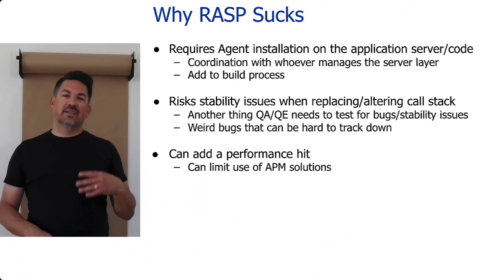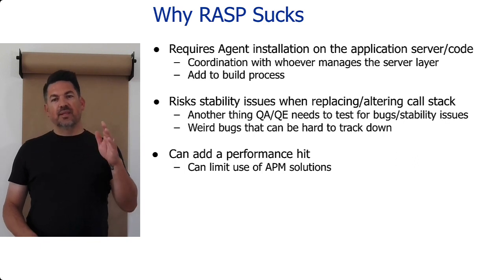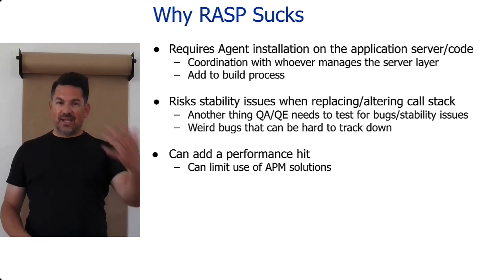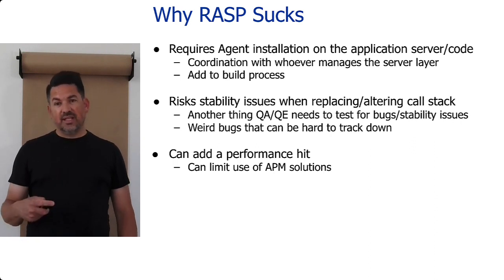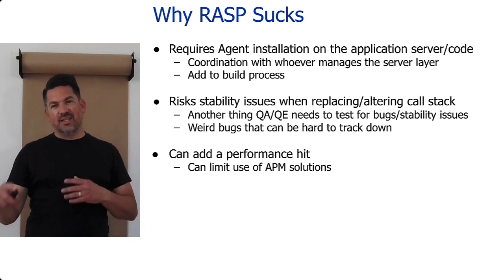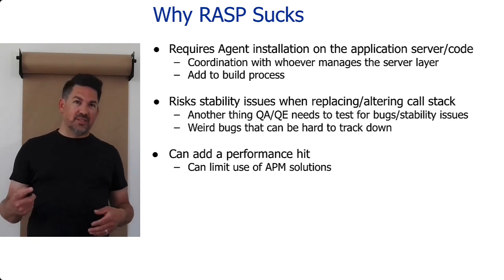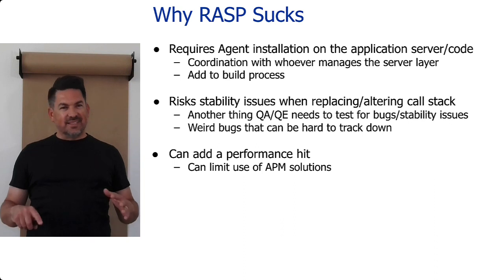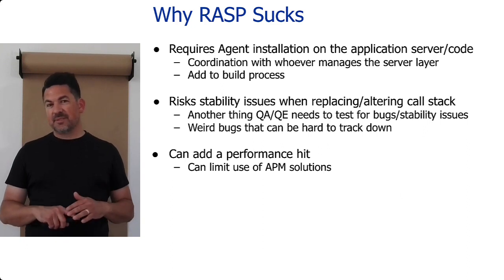But here are the problems. If you remember when I talked about IAST — Instrumented Application Security Testing — the IAST has an agent. RASP also has an agent in the same basic fashion. It needs to attach to the application so that it can actually monitor the activity and take actions to block attacks. That means you need to install this on your running application. You need to coordinate this with whoever is running it — whoever writes the code has to coordinate with the person running it. It potentially has to get put into the build process. It does risk stability issues and performance issues. The vendors are going to say that doesn't happen, and they may have solved a lot of the problems, but it is still a concern.